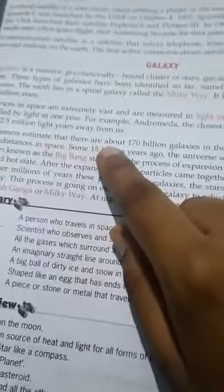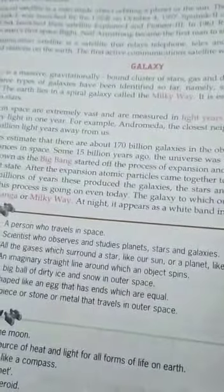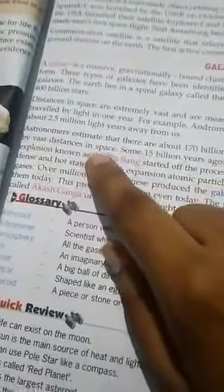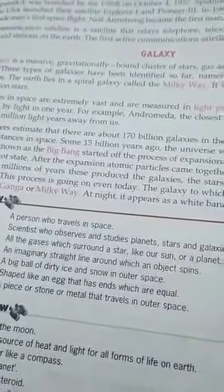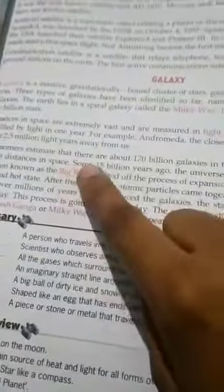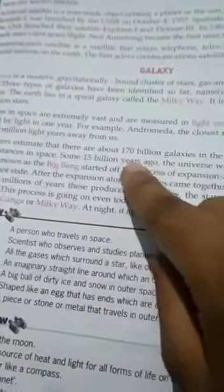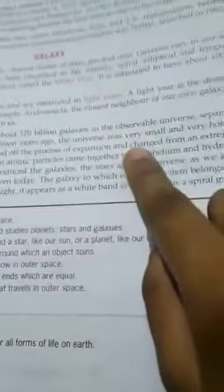Astronomers estimate that there are about 170 billion galaxies in the observable universe separated by vast distances in space. Some 15 billion years ago, the universe was very small and very hot.